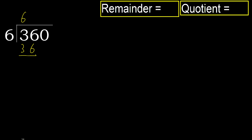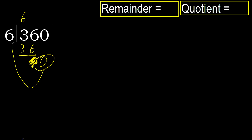36 minus 36 is 0. Next, eliminate 0 on this side. 0, but 0 is less. Therefore, next — that is not a number.